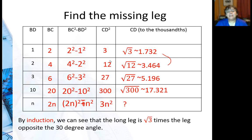We can see that the long leg is square root of 3 times the leg opposite the 30 degree angle, so the short leg. And that's our pattern.